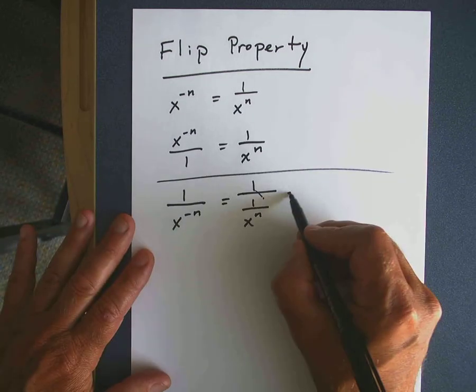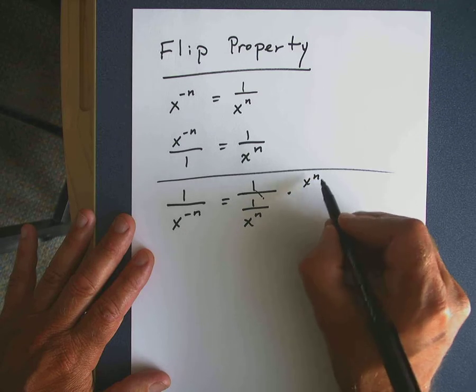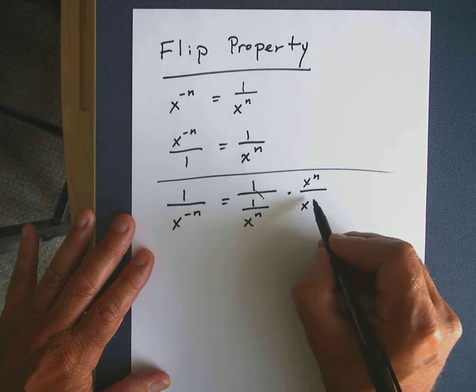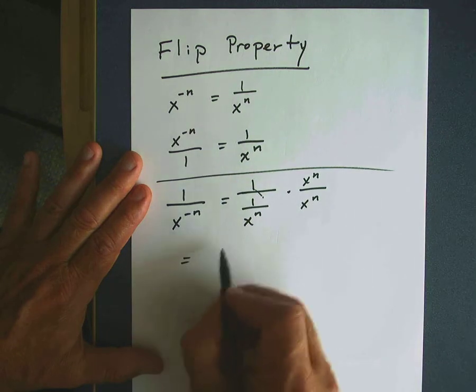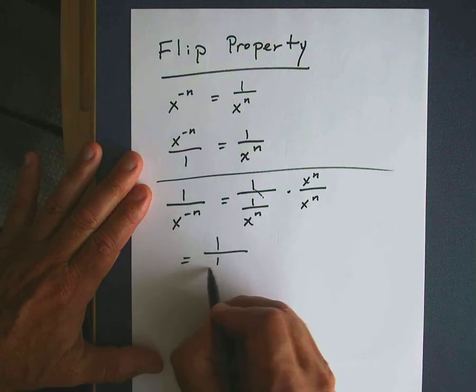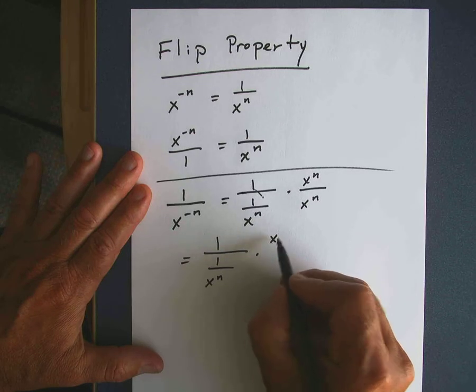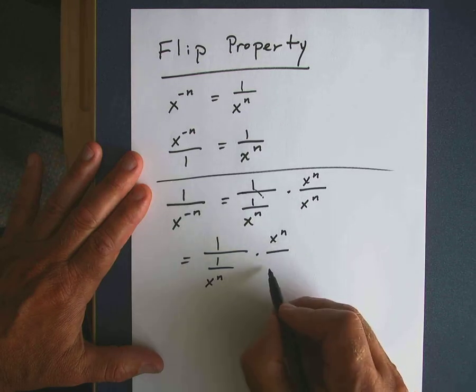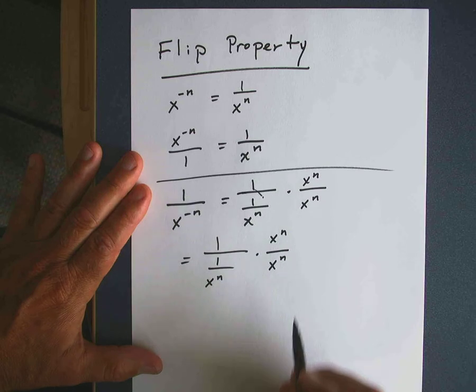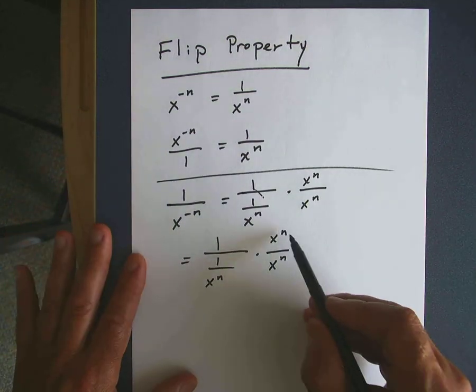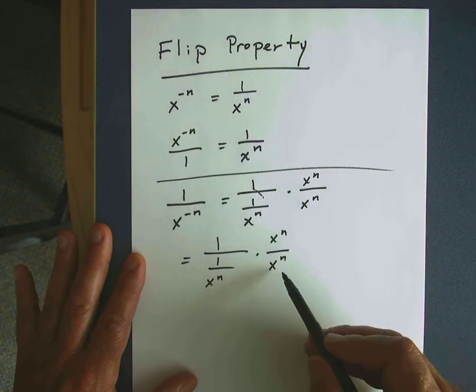So I'm going to multiply both the numerator by x to the n power and the denominator by x to the n power. And let me rewrite this down here. I have 1 over 1 over x to the n, and I multiply it by x to the n over x to the n. And in essence, I'm just multiplying what is 1. x to the n over x to the n is equal to 1.